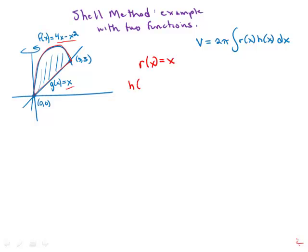And h of x, the height of a shell, is going to be the difference between these two functions. It's going to be f of x minus g of x. And of course, what that is is 4x minus x squared minus x, which is 3x minus x squared.